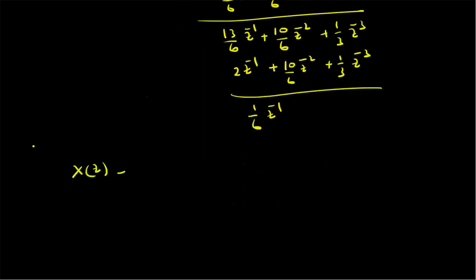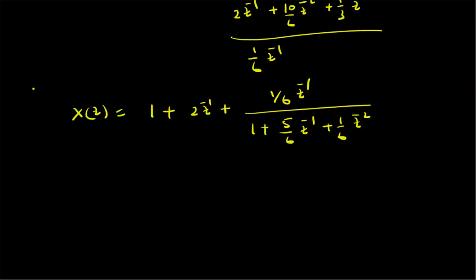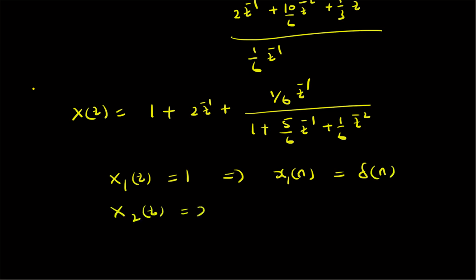Therefore X(z) has integer parts 1 and 2z⁻¹, and the fractional part is (1/6)z⁻¹ divided by the original denominator 1 plus (5/6)z⁻¹ plus (1/6)z⁻². We can now find the inverse z-transform of these three components separately. For convenience, let X₁(z) = 1, which implies x₁(n) is the unit sample function δ(n). And X₂(z) = 2z⁻¹.